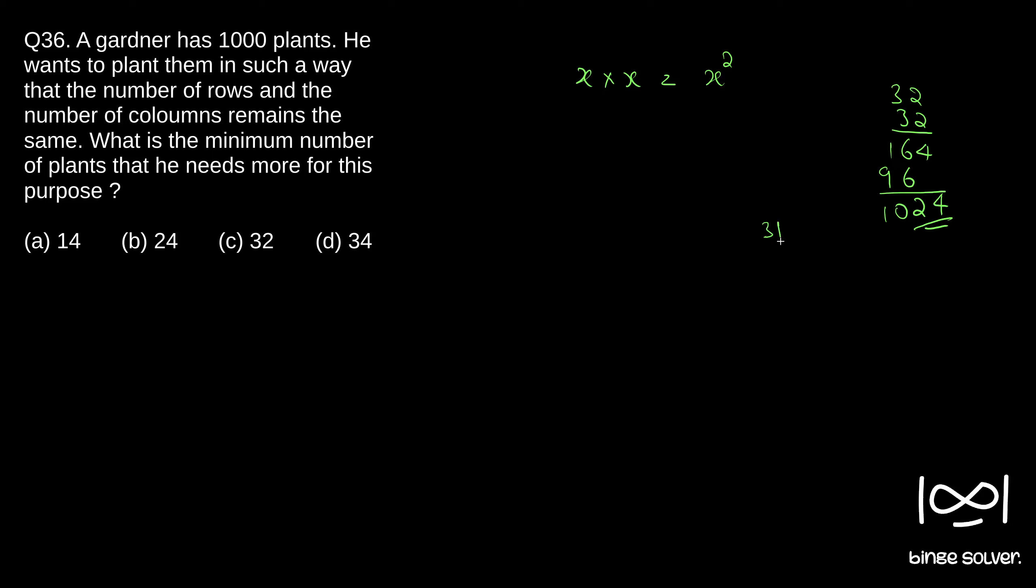31 square is 961. So if you see, 24 more are needed to get the perfect square above 1000. So he already has 1000, so to get 1024 he needs 24 more plants. So 24 is the correct answer, solution to question number 36.